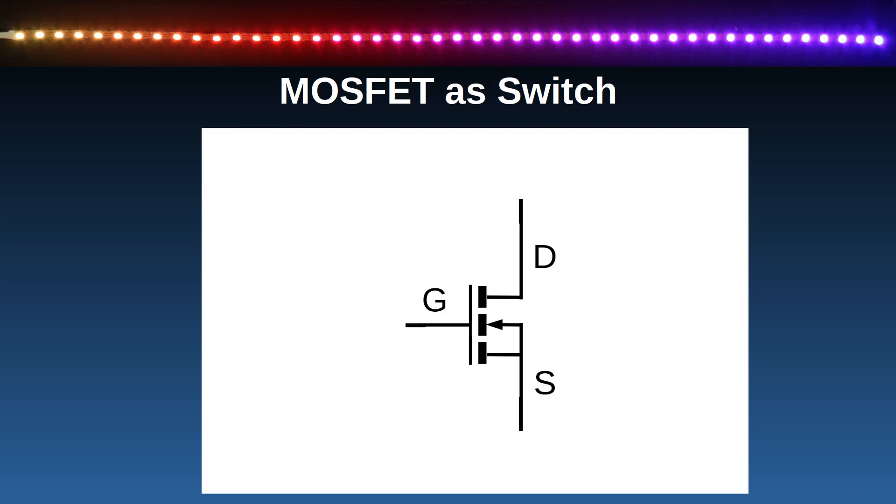When used as a switch, when a positive voltage is applied to the gate, this turns the MOSFET on and allows a current to flow from the drain to the source. The diagram shown is for an N-channel MOSFET, which is commonly used for switching circuits, but there's another type, the P-channel MOSFET.